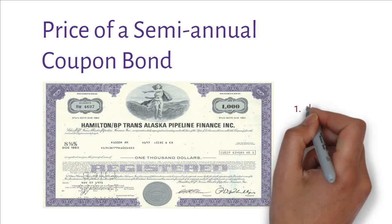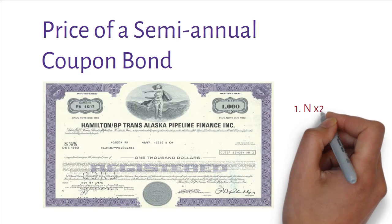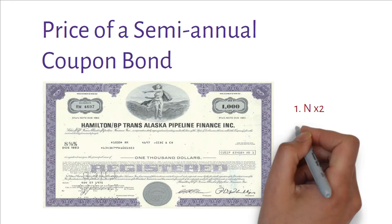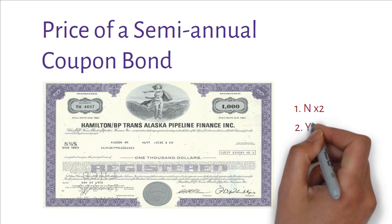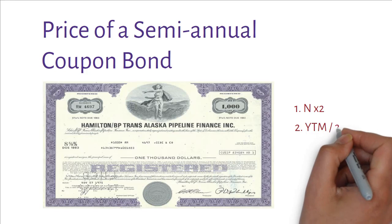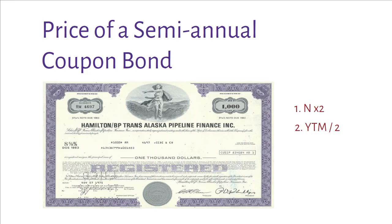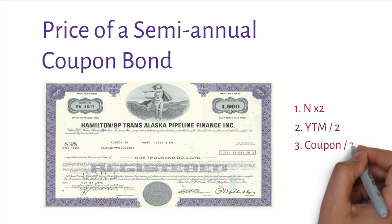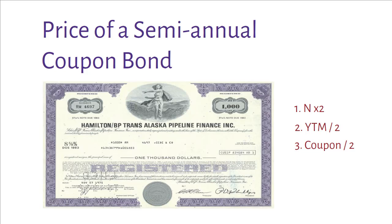Multiply the bond maturity by 2. Divide YTM or required rate of return by 2. Divide coupon payment by 2.